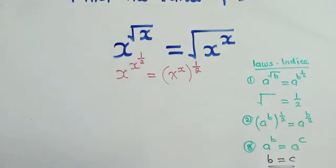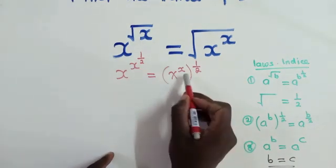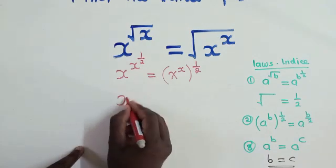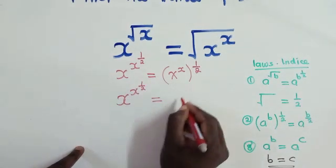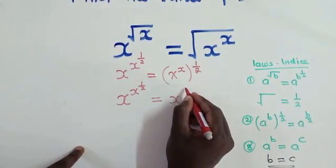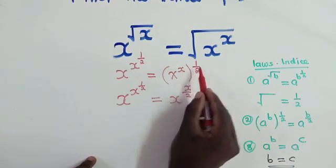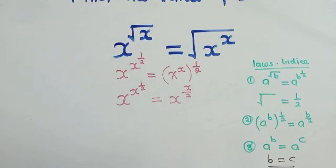After applying this law, we'll come to law number 2. For law number 2, it will work here. Remember the brackets. It will be X power X times 1 over 2, which is equal to X power X over 2. This side we have this power and this power, you multiply them using this second law.